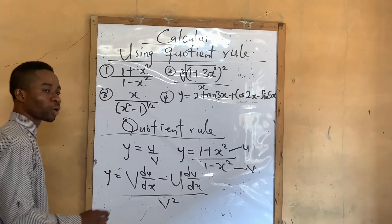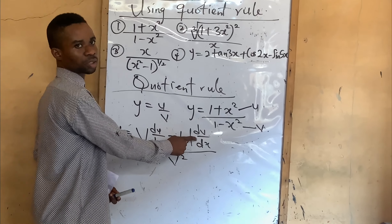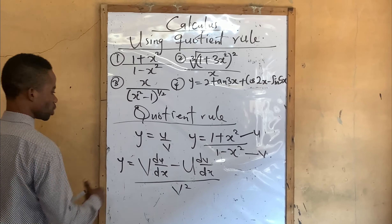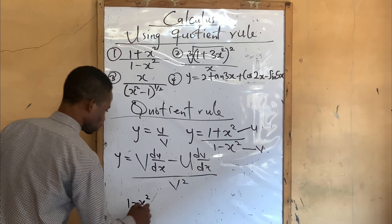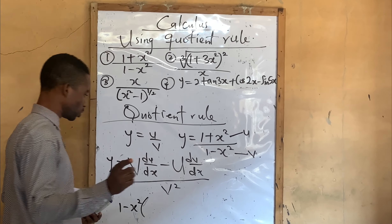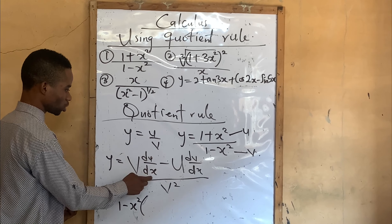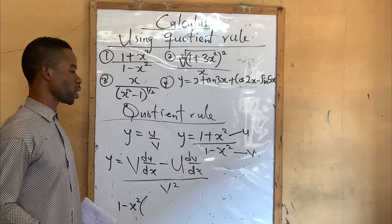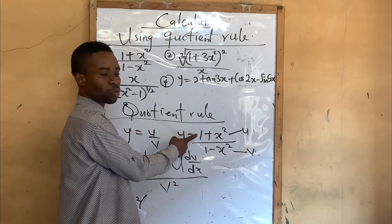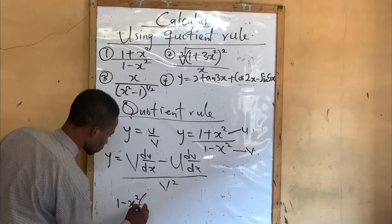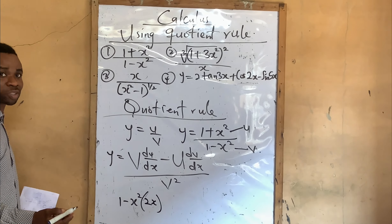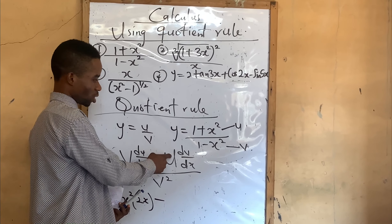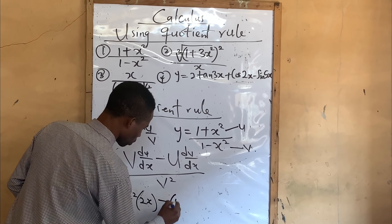Now, do not forget — you are not allowed to swap the order. Our v is (1 minus n squared). We are differentiating u. If I differentiate u, which is (1 plus x squared), the differential of 1 is 0, and x squared gives 2x. So du/dx is 2x.